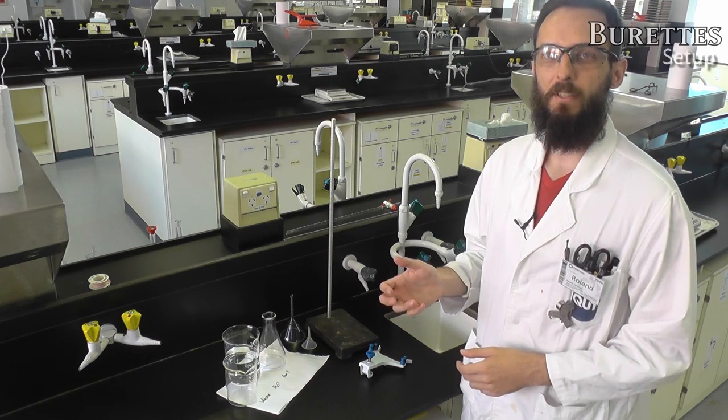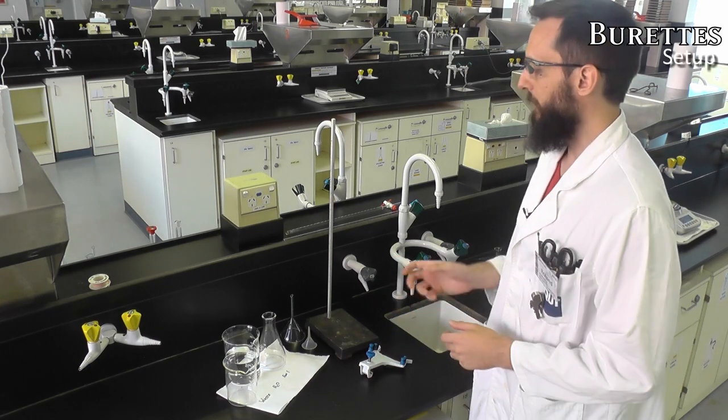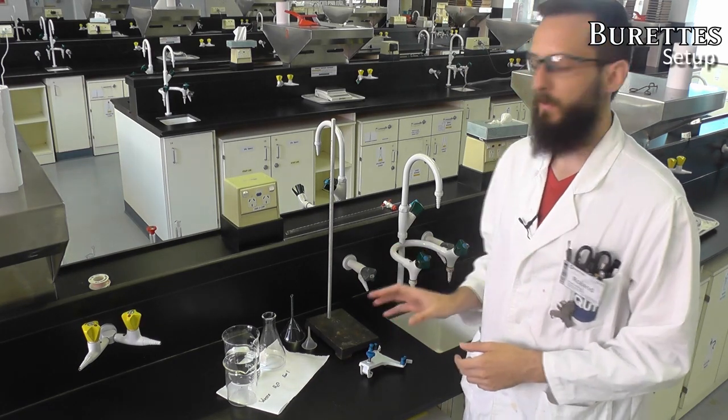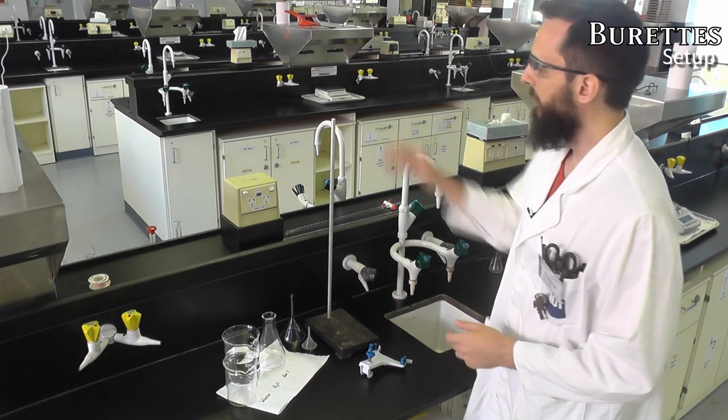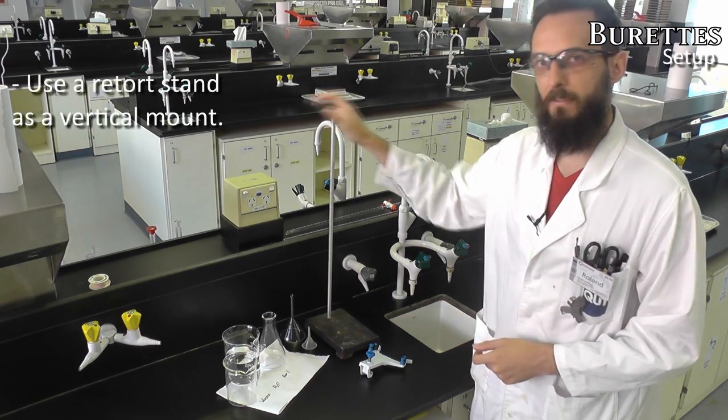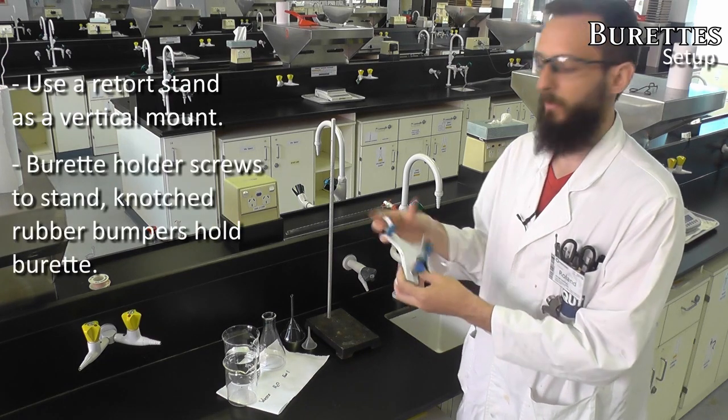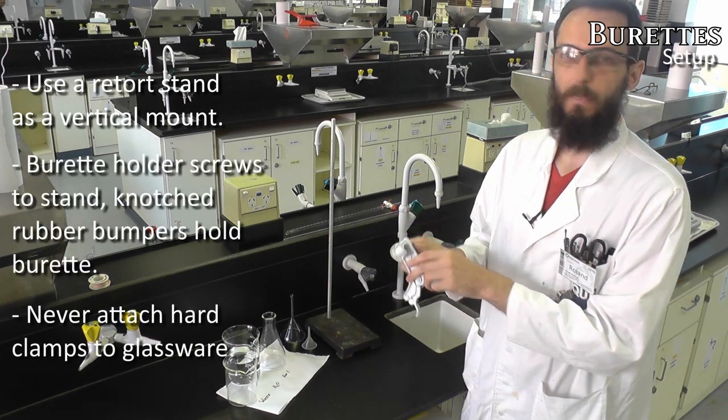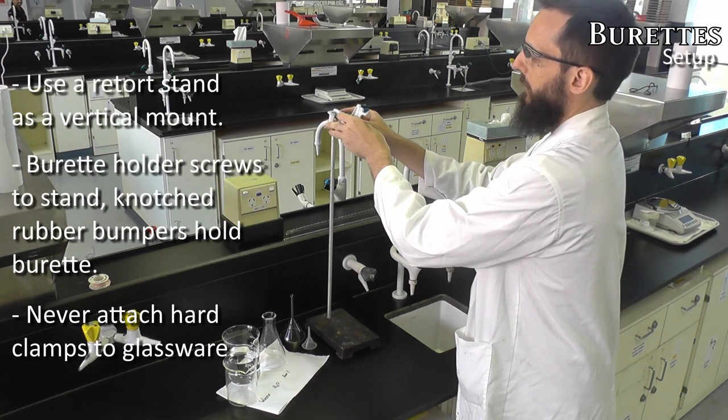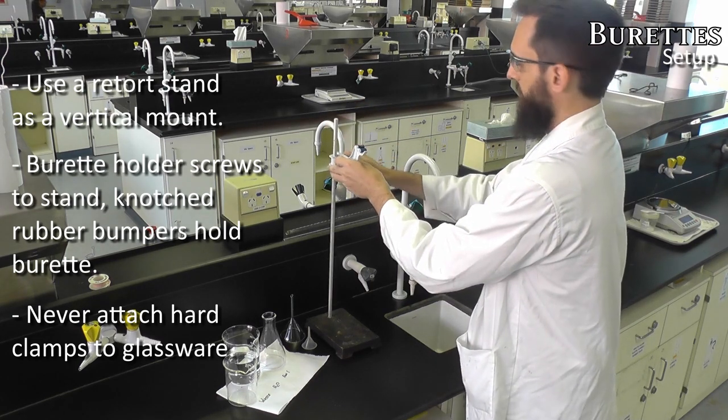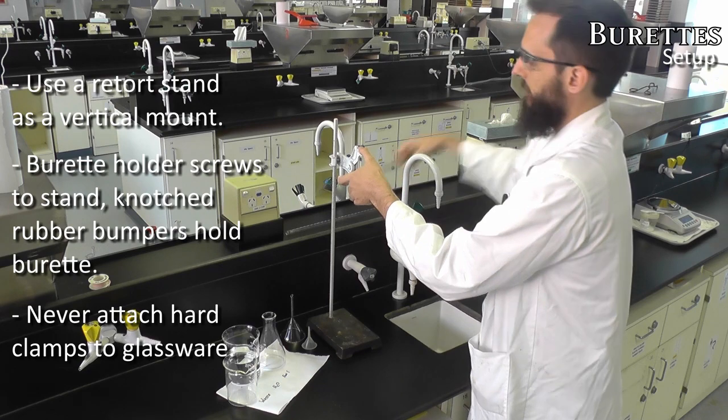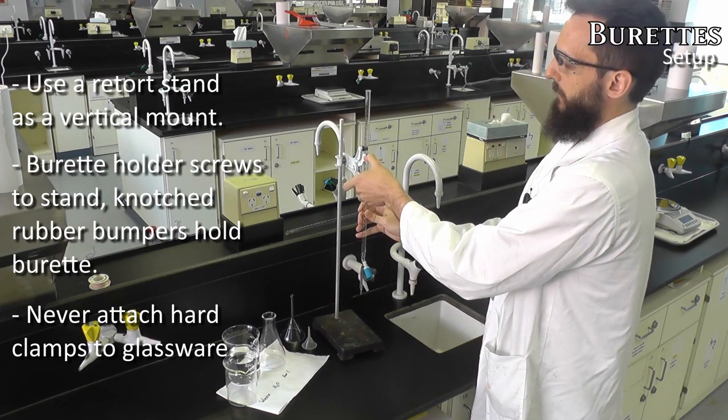Burettes are used to measure stepwise additions of volume. They're most commonly used in titrations, and before I jump into how to use one, first I want to show you the setup that you'll need. Here you have a retort stand and a burette clamp, so you'll see that one side has these rubber holders and the other has a screw. Make sure you always screw onto the metal rod of the retort stand, and then the burette itself clamps into these rubber holders.